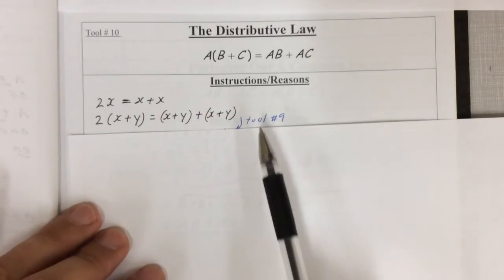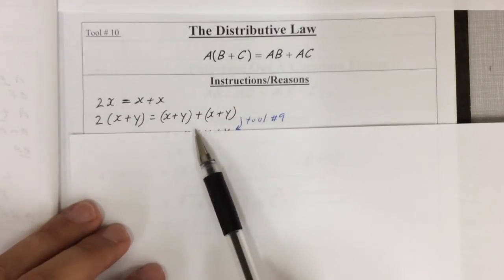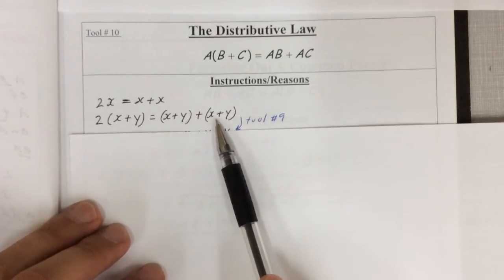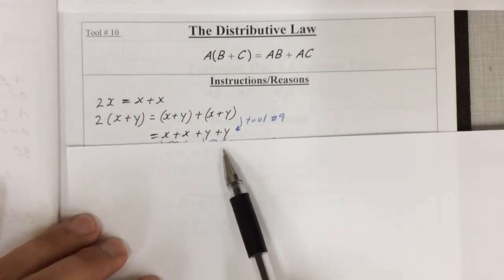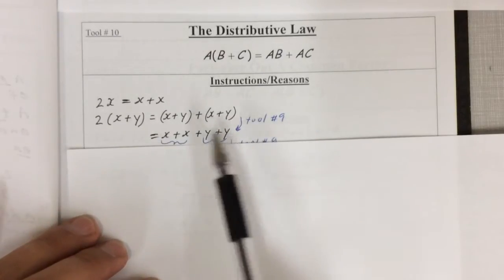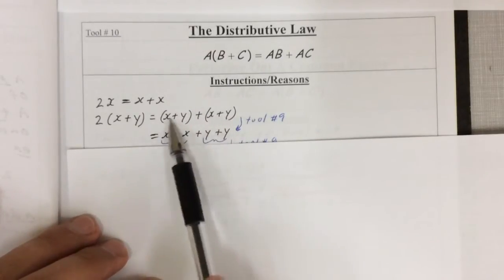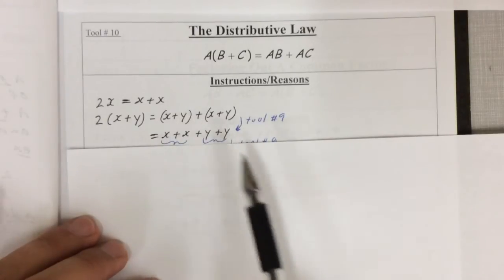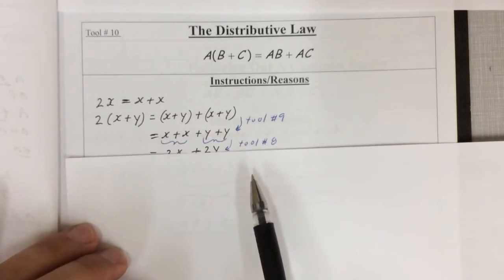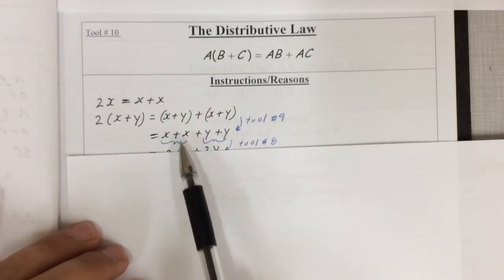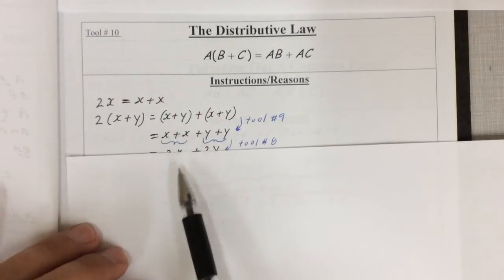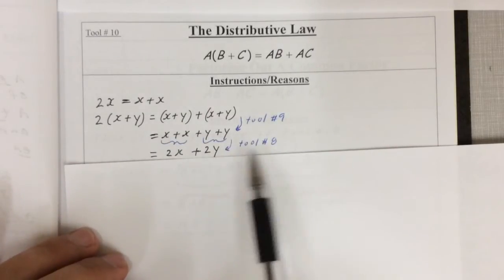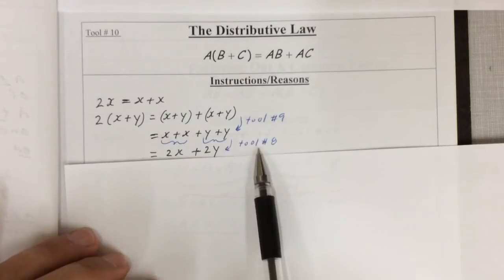Now we use tool 9, which was the adding of polynomials. When we add them, we just take away the brackets and we can reorder them. You take away the brackets and collect like terms — put the x's here, the y's there. x plus x turns into 2x, y plus y turns into 2y. That's collecting like terms.